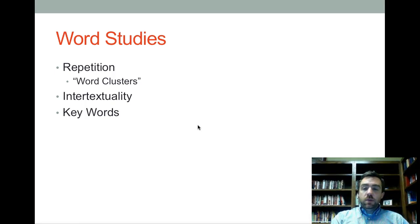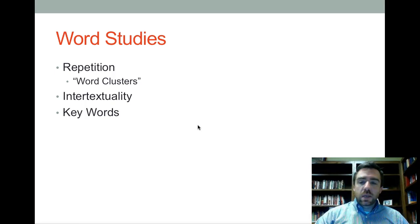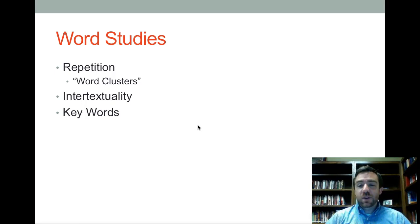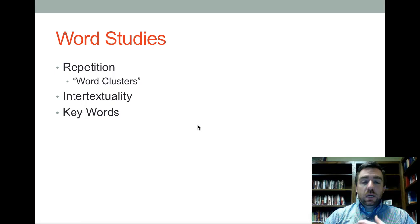Now we're going to talk about discerning themes. First, you can use literary tools — for instance, word studies. Andreas Kostenberger, in his Baker commentary on John, talks about how to discern themes, and one way is using word clusters: repetition of words over and over in a book. If you see a non-common word happening repeatedly — like the word 'light' appearing a lot in a book — maybe it's a theme. Typically the biblical authors are unique individuals with things they want to emphasize.